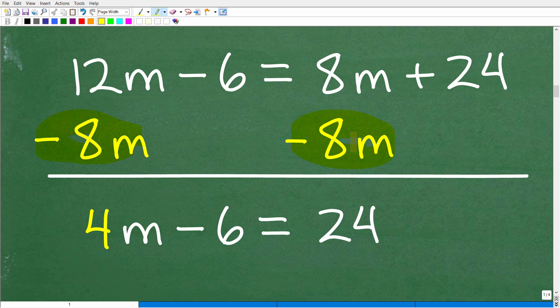So here, I'm going to subtract 8M from both sides of the equation. And when I do that, I'm going to draw a line just like so, and then I'm going to add down in a column manner. So 12M minus 8M is 4M. Negative 6 plus nothing is negative 6. I got my equal sign here. 8M minus 8M is 0. I don't need to write that. And 24 plus 0 is 24, but I'm going to scoot that 24 over here right next to that equal symbol.